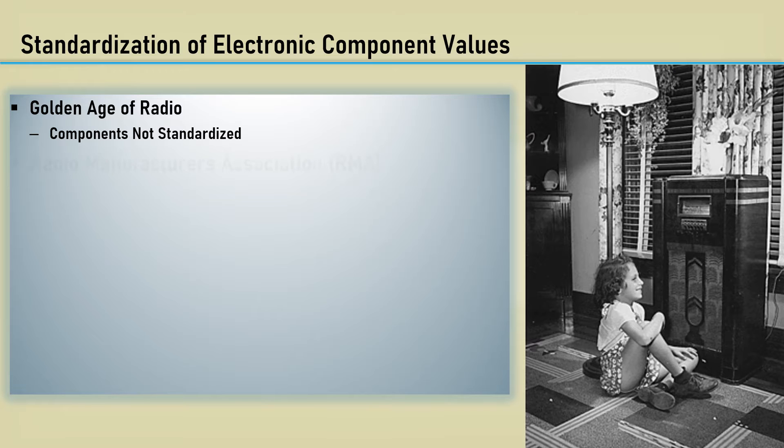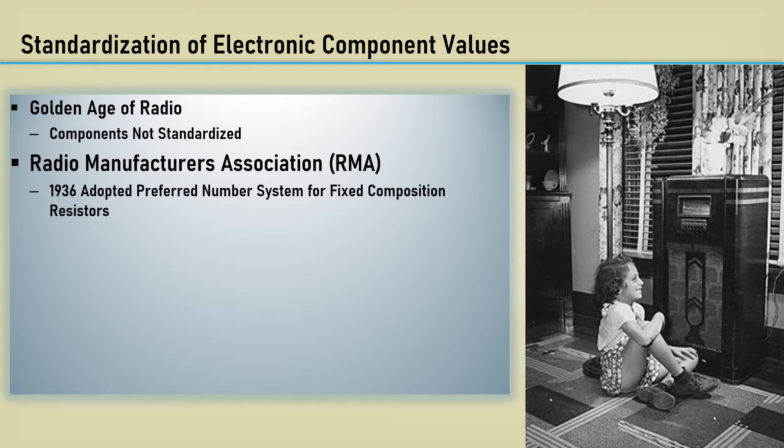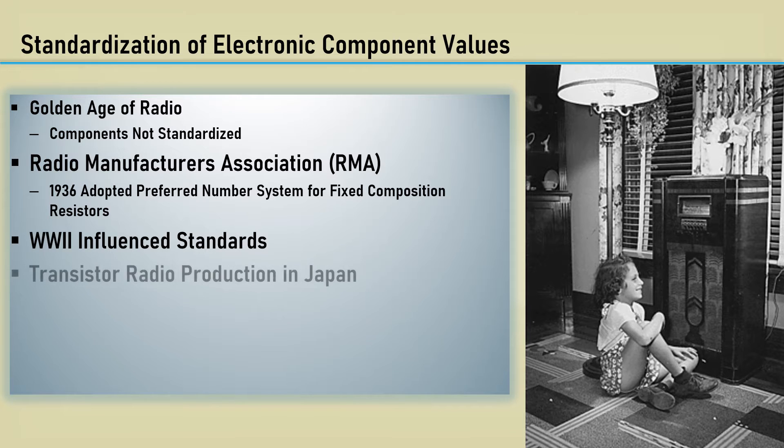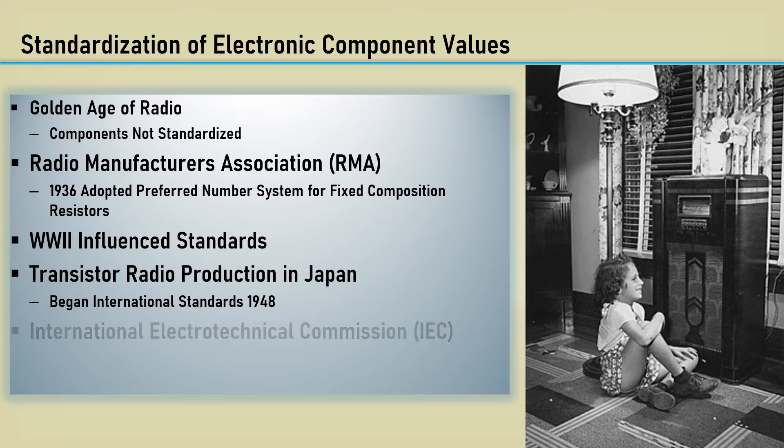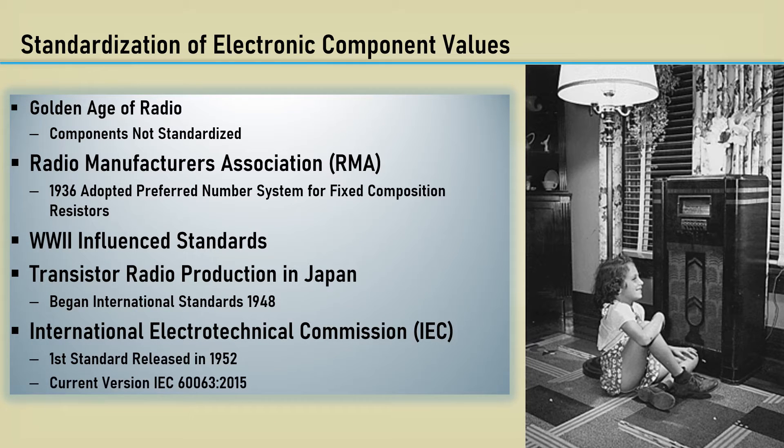The Radio Manufacturers Association in 1936 adopted a preferred number system for fixed composition resistors. World War II was a time of mass development of electronics, which influenced standards as well. With much of the transistor radio production happening in Japan, this spawned the standards to be spread internationally in 1948. The International Electrotechnical Commission released the first component standard in 1952. The last update was in 2015.